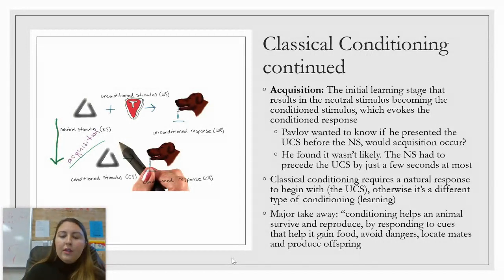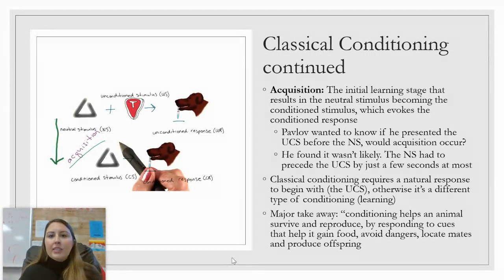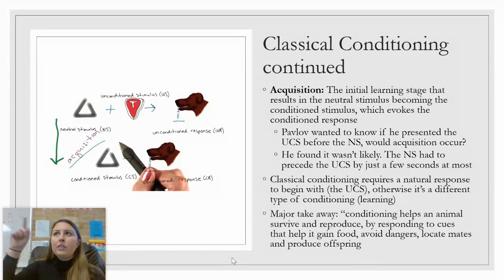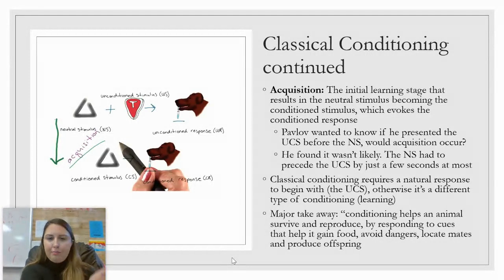Pavlov wanted to know: if the unconditioned stimulus is presented before the neutral stimulus, would acquisition occur? If a bird bit me and then I saw a bird, would I get scared? It would not be as likely as if I saw the bird first and then got bitten. Our brain makes associations and predictions — like my taste aversion to tart frozen yogurt after getting sick and puking it up in eighth grade.